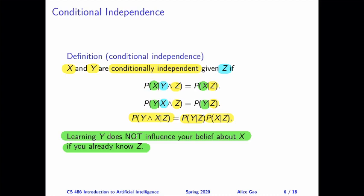That's everything for this video. Let me summarize. After watching this video, you should be able to: formally define unconditional independence and conditional independence; explain the two independence relationships intuitively in your own words; and show that for each independence definition, the multiple mathematical expressions are equivalent. Thank you very much for watching. I will see you in the next video. Bye for now.